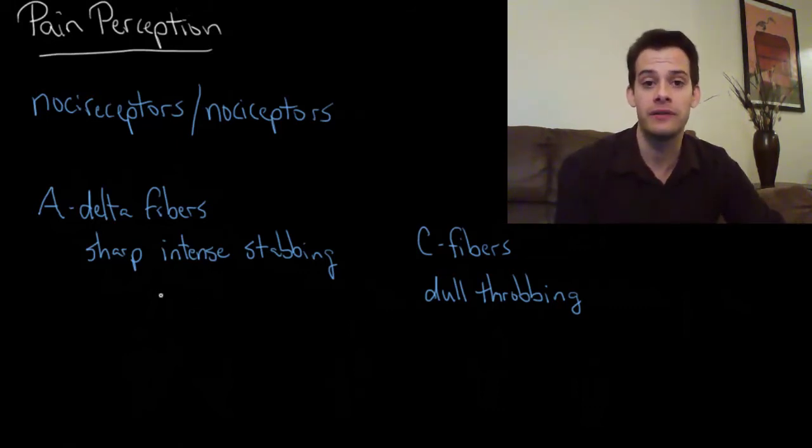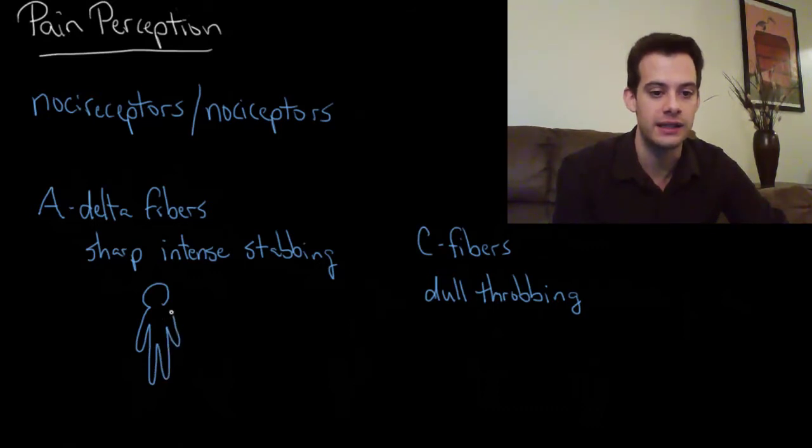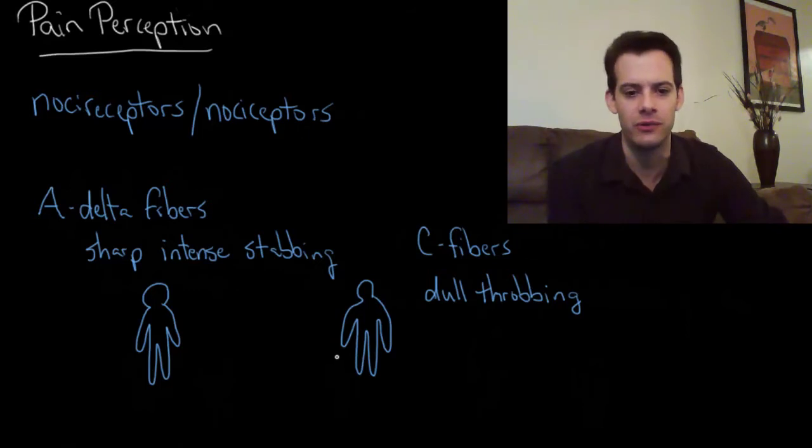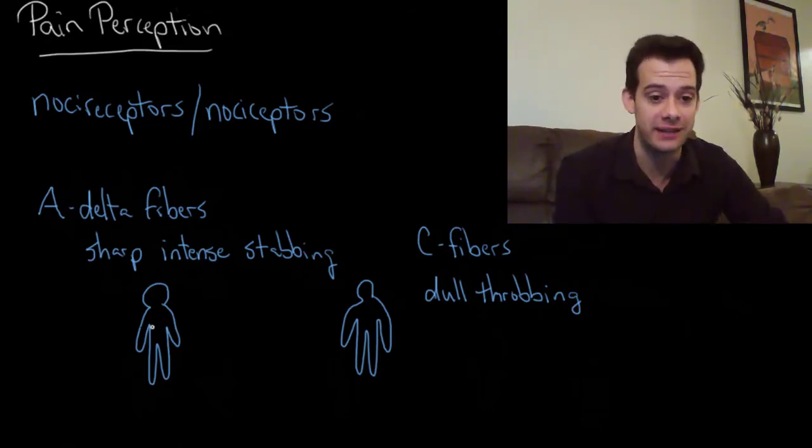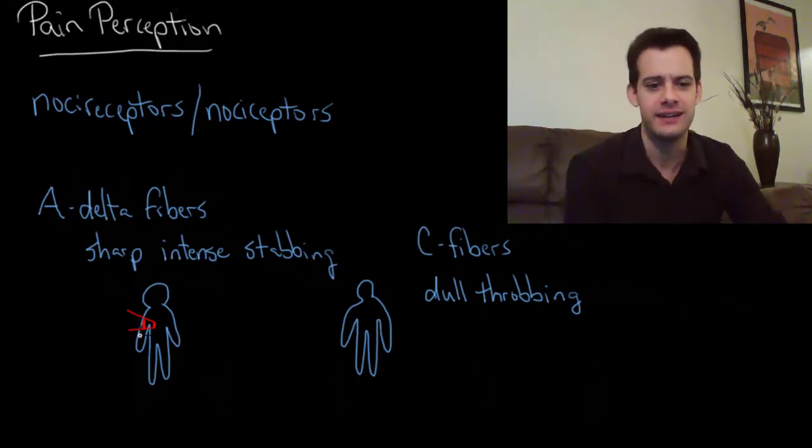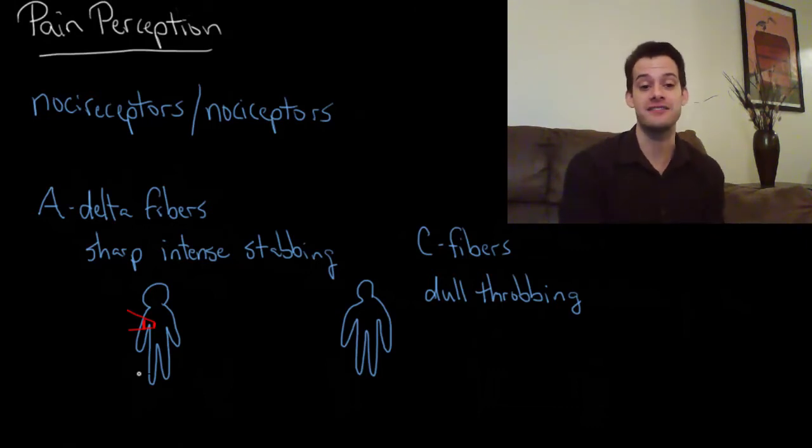How can we remember the difference between A-delta fibers and C-fibers and the types of pain that they convey? I have a silly mnemonic for you, but hopefully it will help you. Let's have two people here. Not the most accurate looking people, but okay. Let's have this first person here experience some sharp, intense pain. We're going to do this by stabbing this person with the sharp end of a letter A. Letter A being stabbed into this person, and this would obviously cause very sharp, intense pain, and it would be carried on A-delta fibers. Hopefully that can help you to remember that.